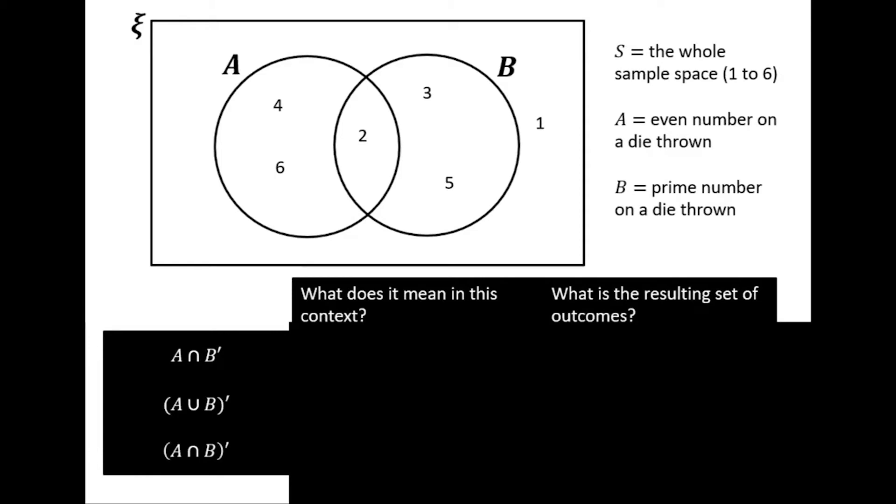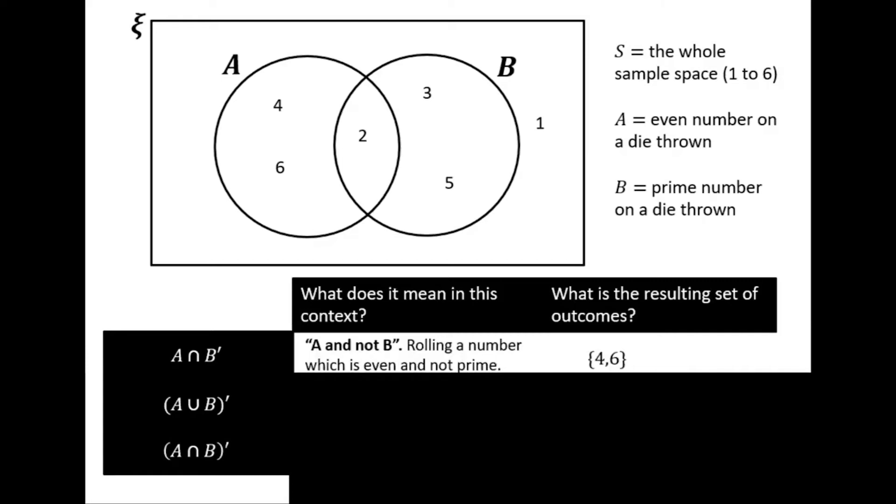Okay, let's try and mix it up a little bit now. A intersection not B. What does it mean in this context? It means an even number that is also not a prime number. So an even number and not a prime number.